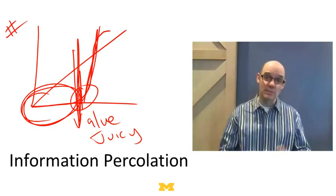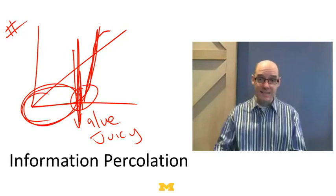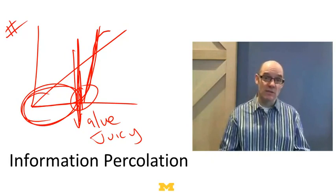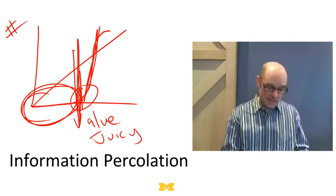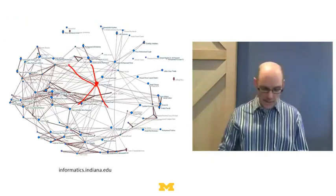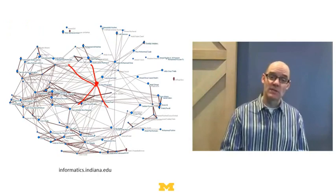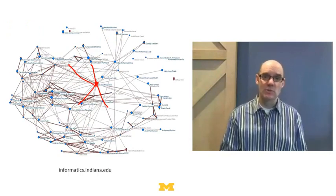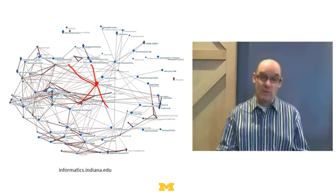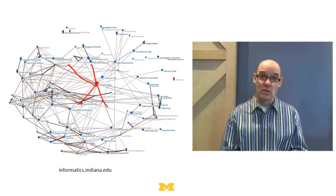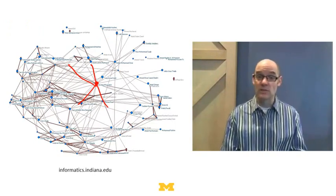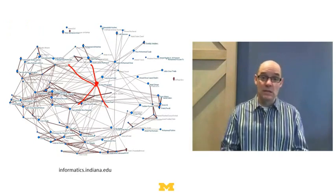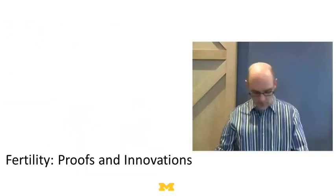And so this says that we should expect the distribution of information, the distribution of rumors, not to be in a linear way with how interesting the information is or how valuable it is, but instead to possibly have this kink, to possibly have this tipping point, and the reason why is because information spreads through networks. And because it spreads through networks, you get this same sort of percolation phenomena.